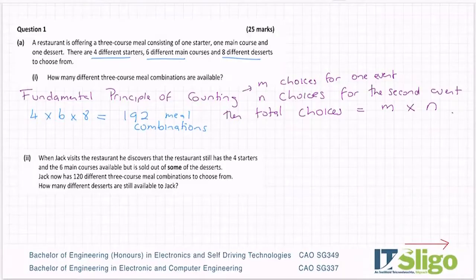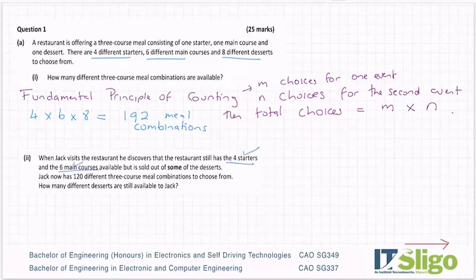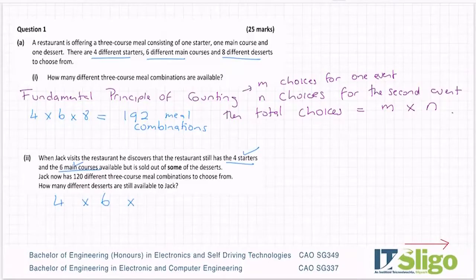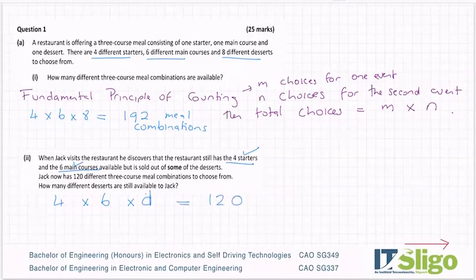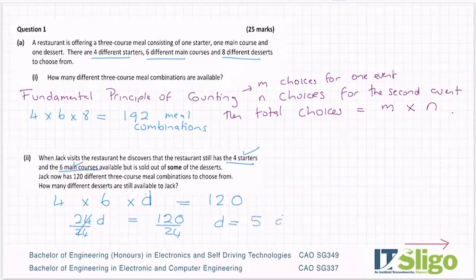Part two. When Jack visits the restaurant, he discovers that the restaurant still has the four starters and the six main courses available, but it is sold out of some of the desserts. Jack now has 120 different three course meal combinations to choose from. How many different desserts are still available to Jack? We still have four starters, six mains, and D desserts, giving 120 combinations. So 24D equals 120, therefore D equals 120 divided by 24, which equals five desserts.